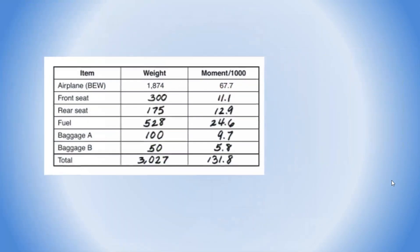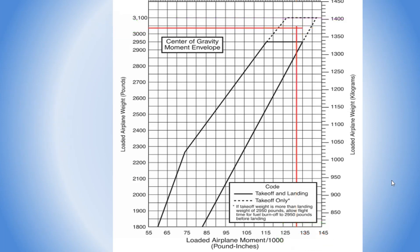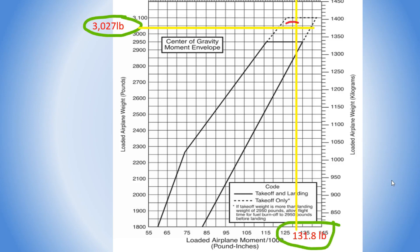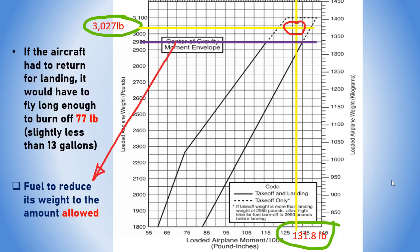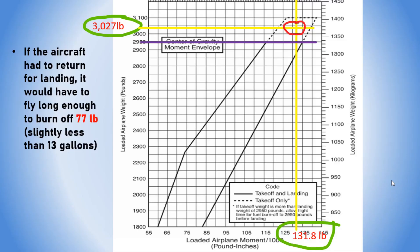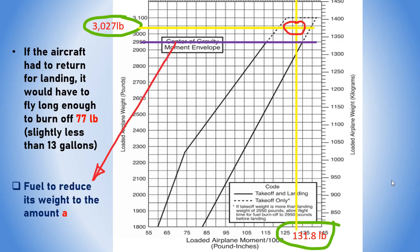The loading schedule should show a total weight of 3,027 pounds and a loaded airplane moment divided by 1,000 of 131.8. Drawing a vertical line from 131.8 on the horizontal index and a horizontal line from 3,027 pounds should intersect within the dashed area — indicating the aircraft is properly loaded for takeoff but too heavy for landing. If the aircraft needed to return to land, it would have to burn off 77 pounds — slightly less than 13 gallons of fuel.